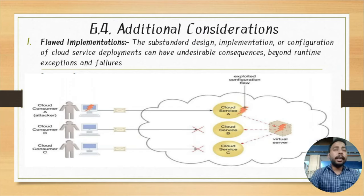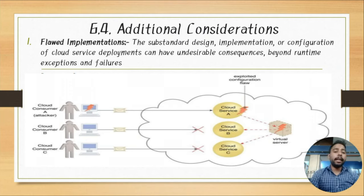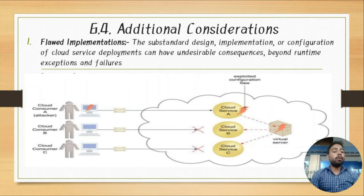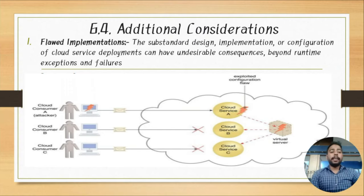An attacker diagram can suggest that cloud consumer A sends a message to trigger a configuration flaw in cloud service A, which is a virtual server also hosting cloud service B and cloud service C. If a consumer attacks that virtual server, it impacts other cloud consumers accessing that server — effectively deactivating numbers of other service hosts. This is a flaw in implementation — a vulnerability that the attacker can exploit.